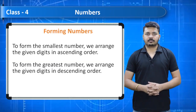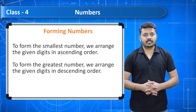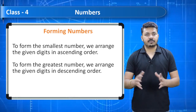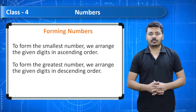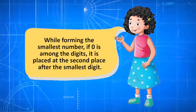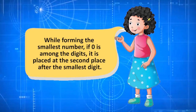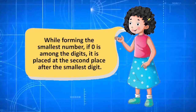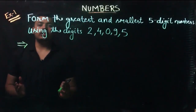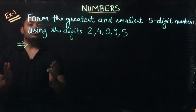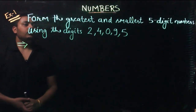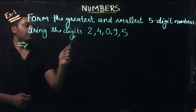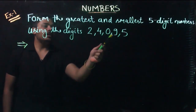Forming numbers: to form the smallest number, arrange the given digits in ascending order. To form the greatest number, arrange the given digits in descending order. When forming the smallest number, if zero is among the digits, it is placed at the second position after the smallest non-zero digit. Let's look at an example: form the greatest and smallest five-digit numbers using the digits 2, 4, 0, 9, and 5.